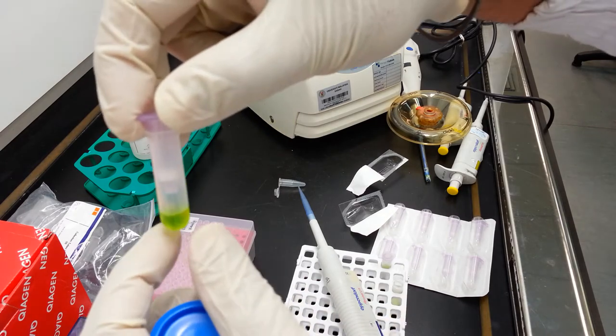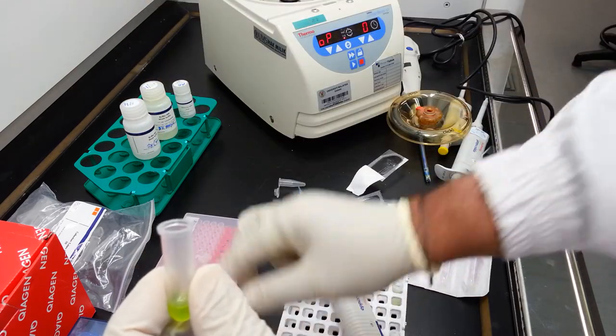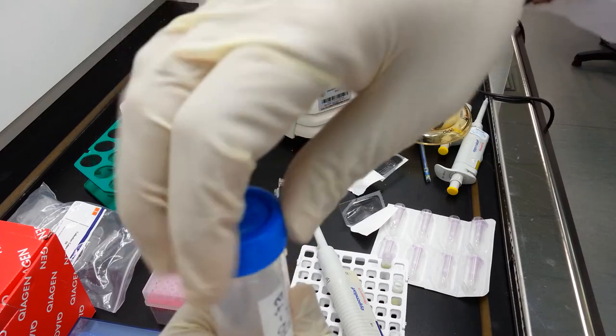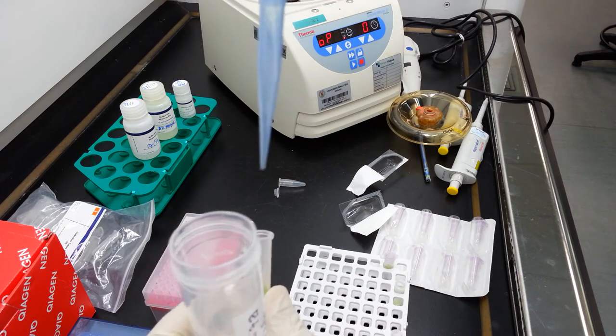This is what you will see after you spin down. You can now discard the upper column and add an equal volume of 100% or absolute ethanol to the lower filtrate.